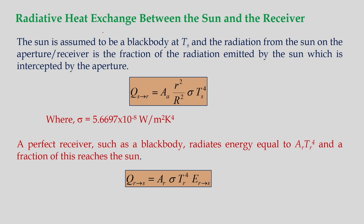Let us see the radiative exchange between the sun and the receiver. Considering the sun as a black body with temperature Ts, the radiation intercepted by the aperture or receiver is expressed as Qs→r = (Ar²/R²)σTs⁴, where σ is the Stefan-Boltzmann constant. A perfect receiver such as a black body radiates energy equal to Ar·Tr⁴, and a fraction of this reaches the sun, expressed by a corresponding expression.